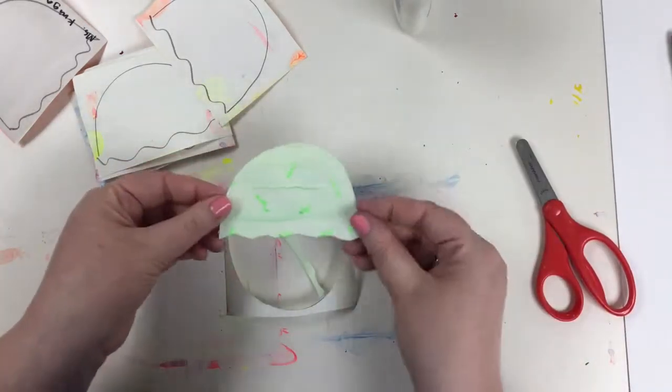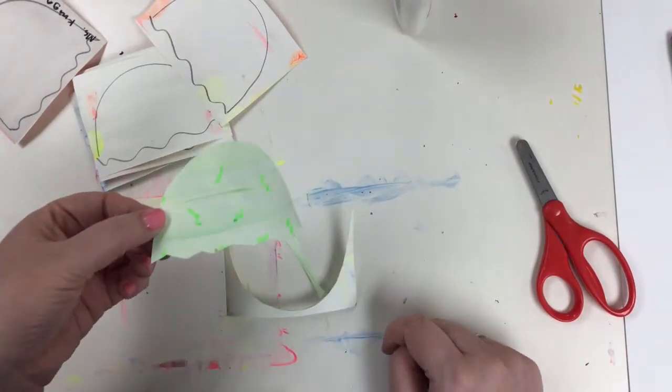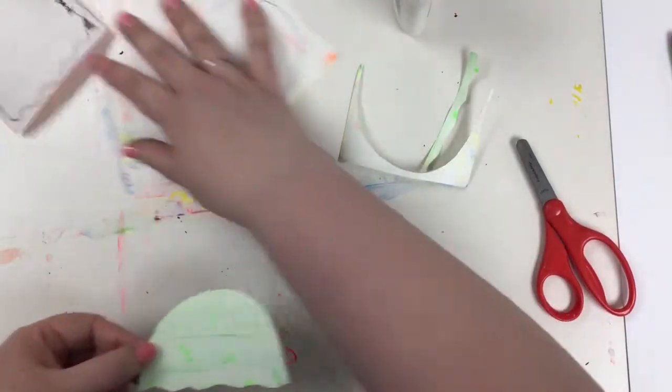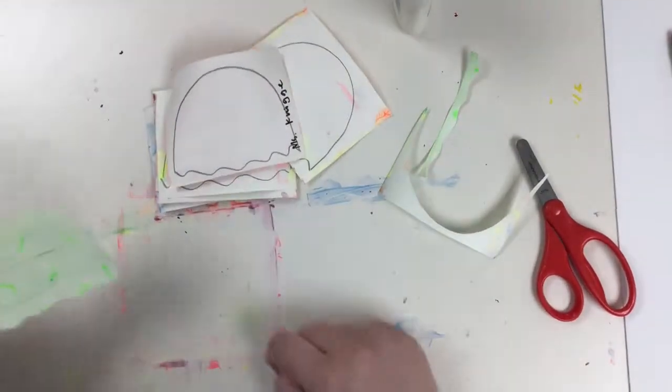And then you can flip it over, and you can see I cut out my green ice cream scoop. I'm going to go ahead and do that to the rest of my colors.